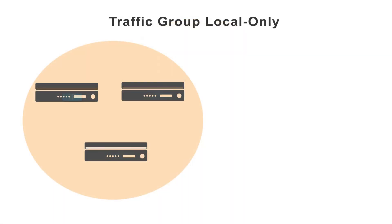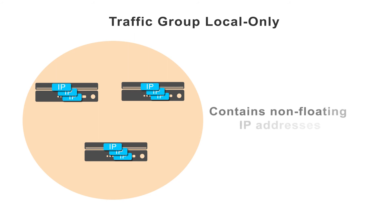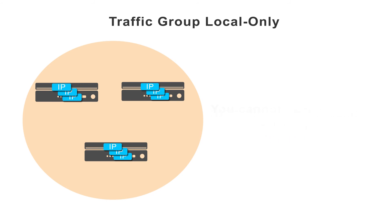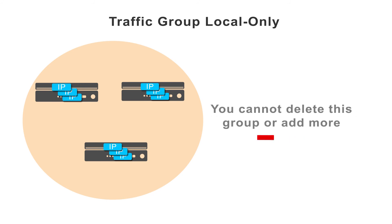There's a specific traffic group on every device that contains non-floating IP addresses, called traffic group local only. This traffic group comes with the system. Its purpose is to prevent certain IP addresses from syncing to other devices during a config sync. Any non-floating IP addresses on the system live in this traffic group — for example, the non-floating self-IP addresses used for config sync and failover communication between devices. You cannot delete this traffic group from a BIG-IP device, nor can you create additional non-floating traffic groups.